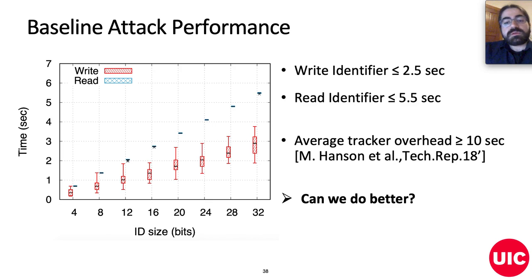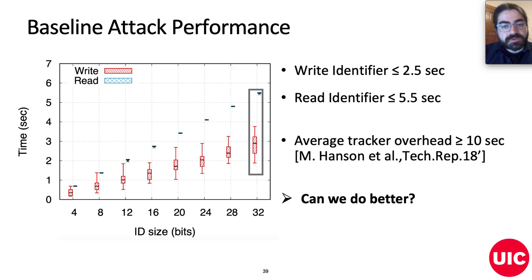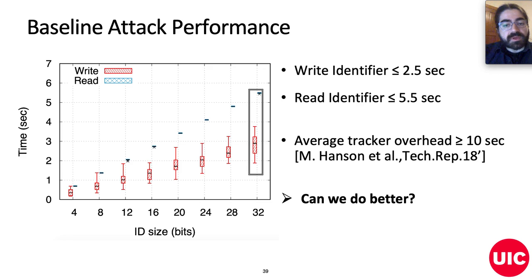Moving on to the evaluation, we quantified the effectiveness and performance of our attack under different experimental setups. For every phase, we measured the time required for the browser to complete the redirections and for the server to respond to requests. As can be seen from the plot, writing times vary for different ID sizes, and on average we can write a full 32-bit identifier in approximately less than 3 seconds. Due to the nature of the attack and the redirections, reading times are more narrow and we can reconstruct the same identifier in approximately 5 seconds. Using a 32-bit identifier, we can fingerprint more than 4 billion users, reflecting internet-scale tracking. These numbers indicate that our attack is practical under real-world settings, since the page latency introduced by trackers and modern websites is more than 10 seconds.